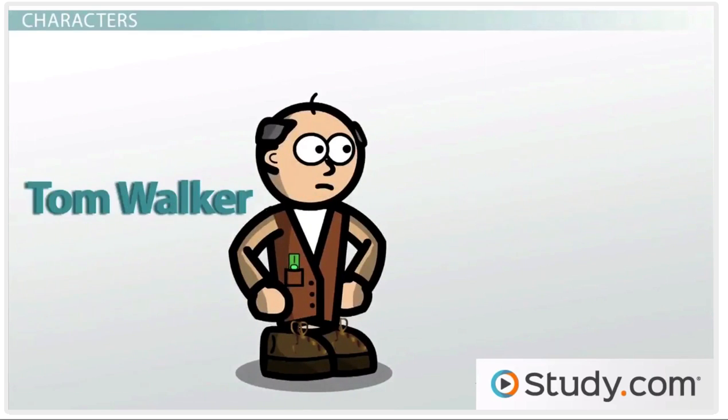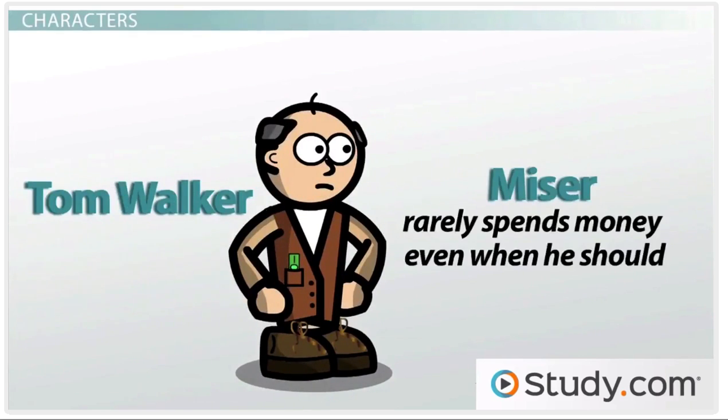Tom Walker, the story's main character, is a miser, which means he rarely spends money even when he should. He doesn't give anything to anyone, and that includes his wife.